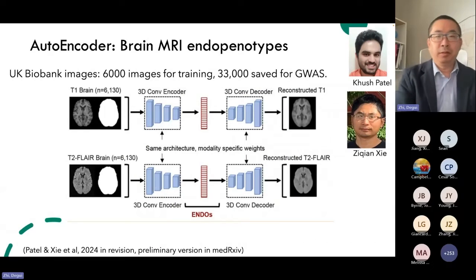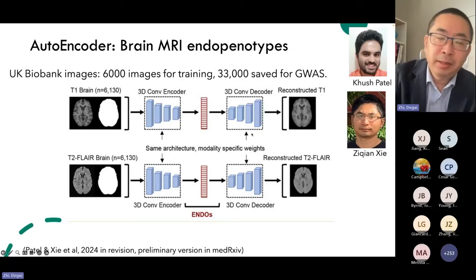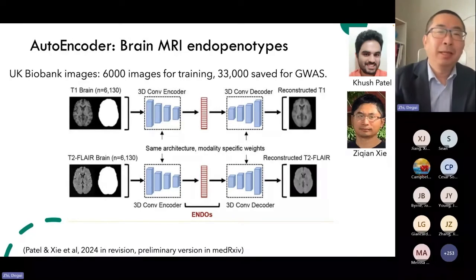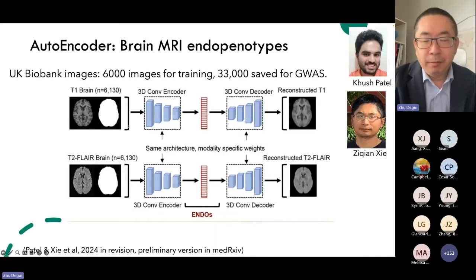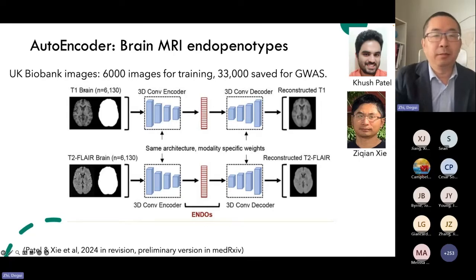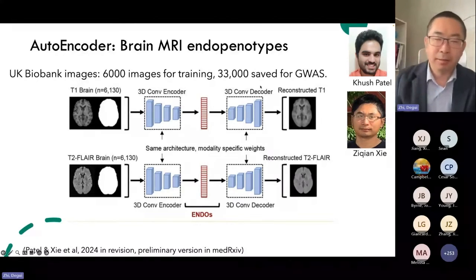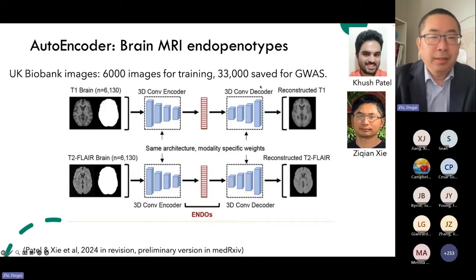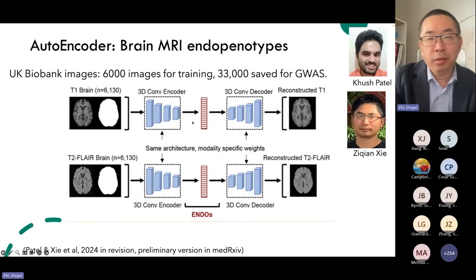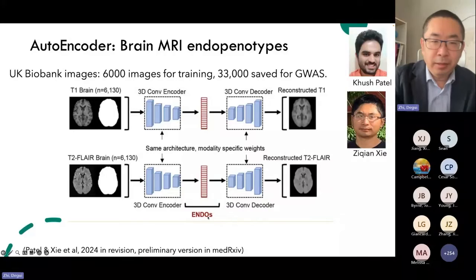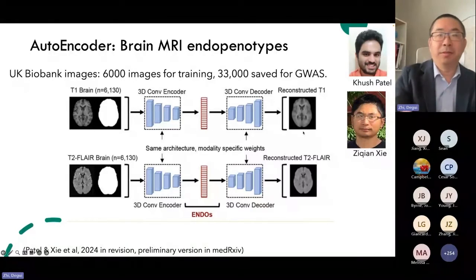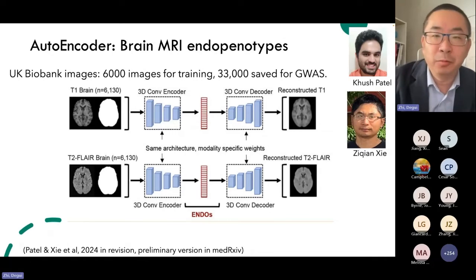Let me show how we do this with the autoencoder. We use brain imaging taken from UK Biobank — a great resource with half a million people in the UK, with imaging and genetic markers for everyone. We take 6,000 images for training and save the remainder for genetic association. The architecture takes a T1 or T2 brain image through a 3D convolutional encoder to derive a 128-dimension endophenotype vector, then a decoder reconstructs it. The reconstruction is roughly okay — it loses some high-resolution detail but grasps the overall shape.